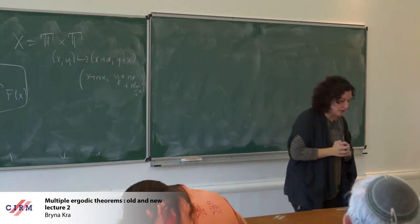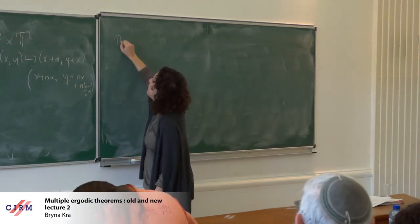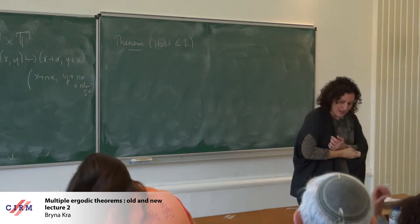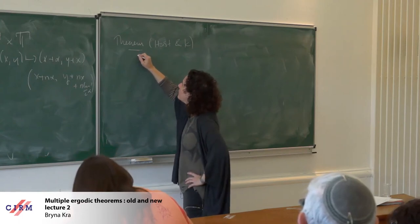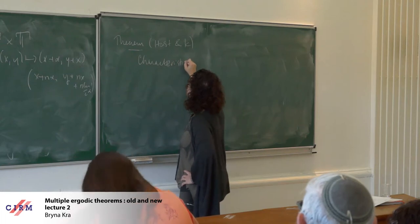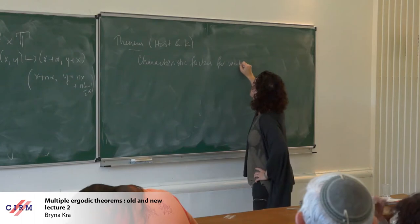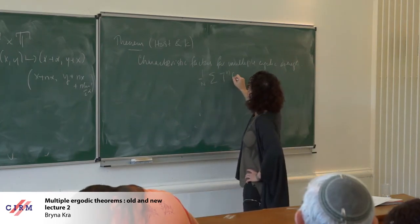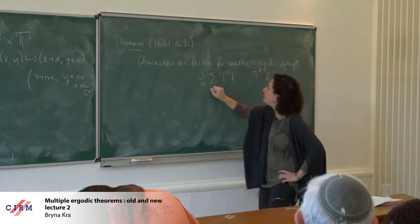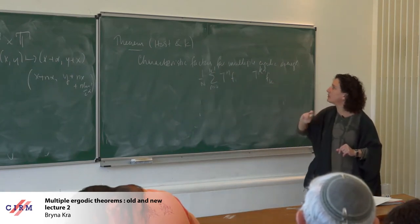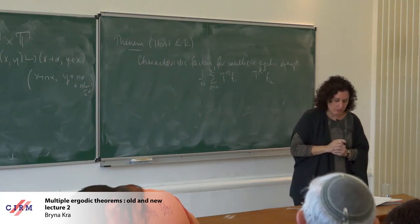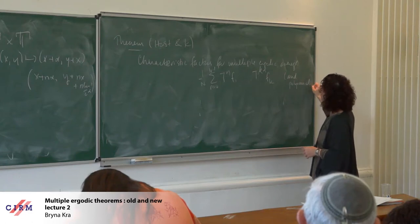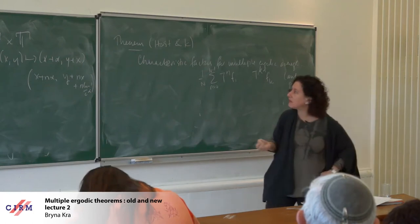In the work with Host — and I briefly mentioned this yesterday — the way I phrased this 10 years ago, but I will give a new phrasing that's much more recent in a few minutes: the characteristic factors for the multiple ergodic average — which is just the average of T^n f1 times ... times T^{kn} f_k — and this is true more generally, but I'm just going to phrase this for the averages of long arithmetic progressions and the polynomial expressions I had on the board yesterday. The characteristic factors for these are inverse limits of nil systems.